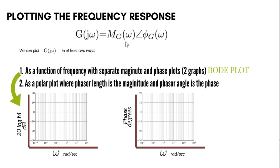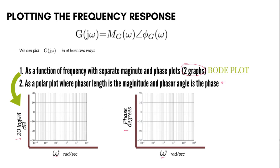Any complex number can be plotted in at least two ways. One is the polar plot, where you plot length and angle. Alternatively, we can plot frequency against the magnitude and also frequency against the phase. This gives us two graphs — one for the magnitude and one for the phase. When plotted in this way, it is called a Bode plot. The response of the system changes with frequency; for every frequency, the change in M and the change in phase is different.